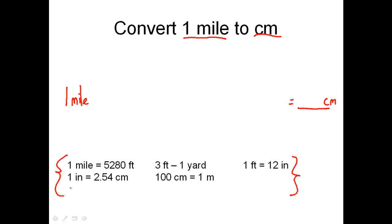These conversion factors are going to fill up the middle of the problem. We're not going to use every single one — I gave you a few to choose from to practice selecting the correct ones. One mile needs to be converted into another unit, so I need a conversion factor that expresses miles. I find it here: one mile equals 5,280 feet.